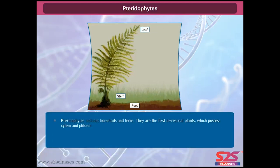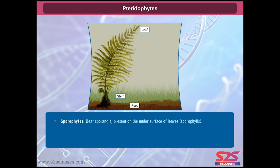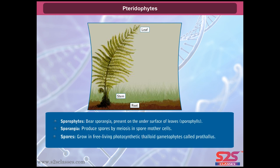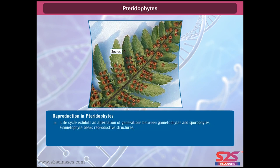Pteridophytes include horsetails and ferns. They are the first terrestrial plants which possess xylem and phloem. They are found in cool, damp, and shady places, though some grow in sandy soils. The main plant body is the sporophyte, which is differentiated into true stem, leaves, and roots. Sporophytes bear sporangia present on the undersurface of leaves called sporophylls. Sporangia produce spores by meiosis in spore mother cells. Spores grow into free-living photosynthetic thaloid gametophytes called prothallus.